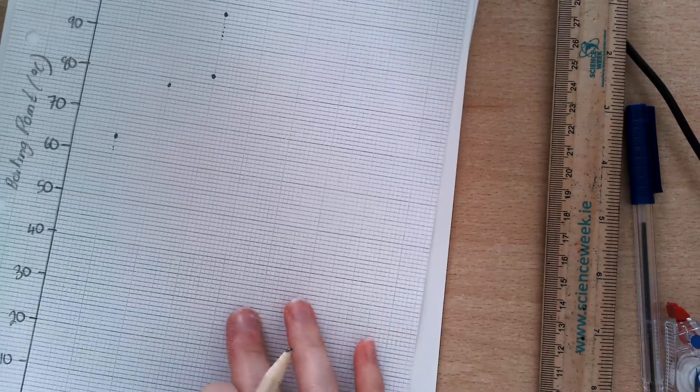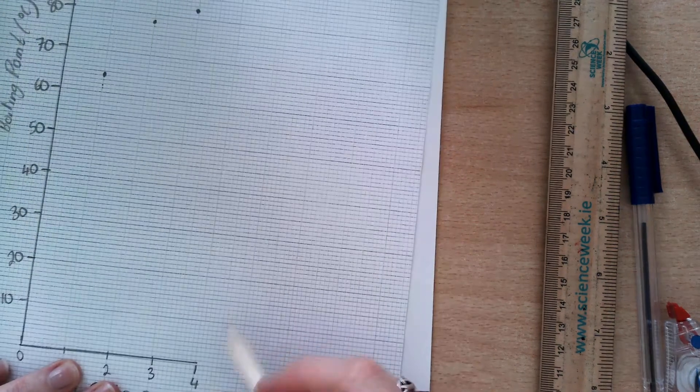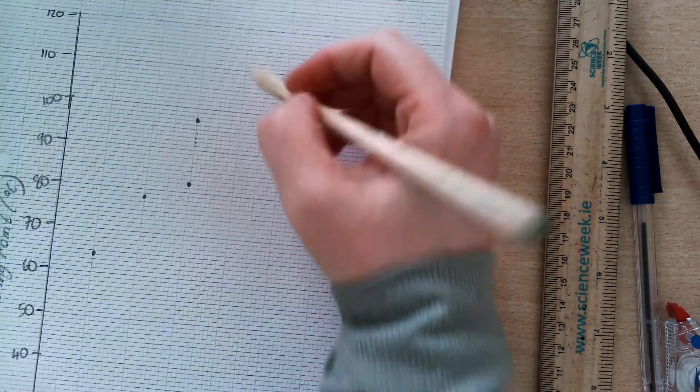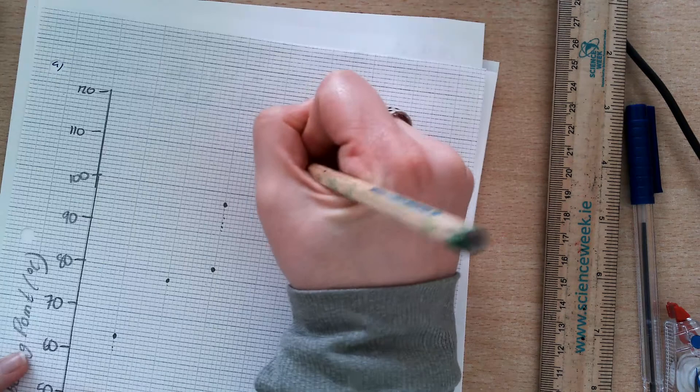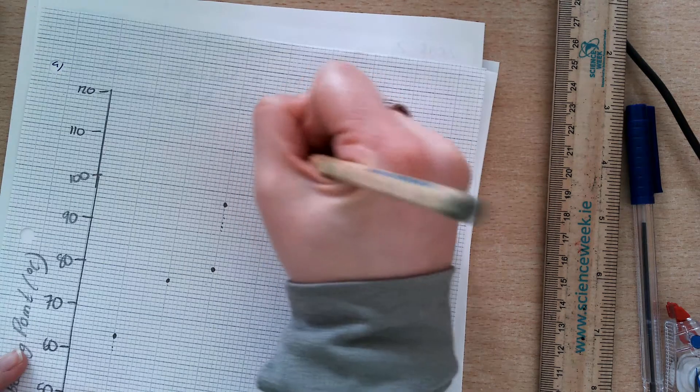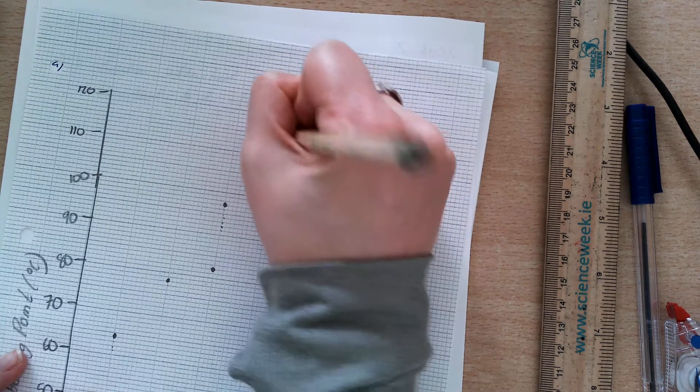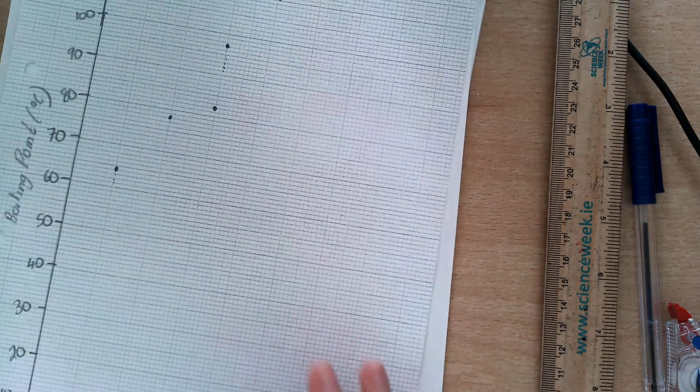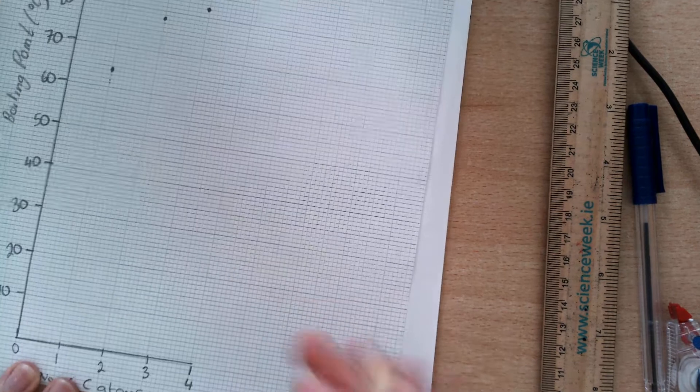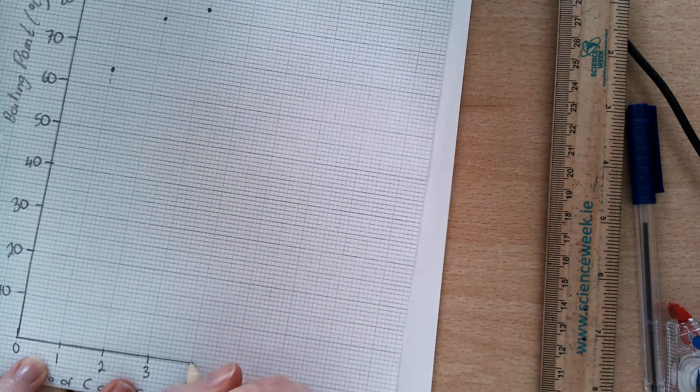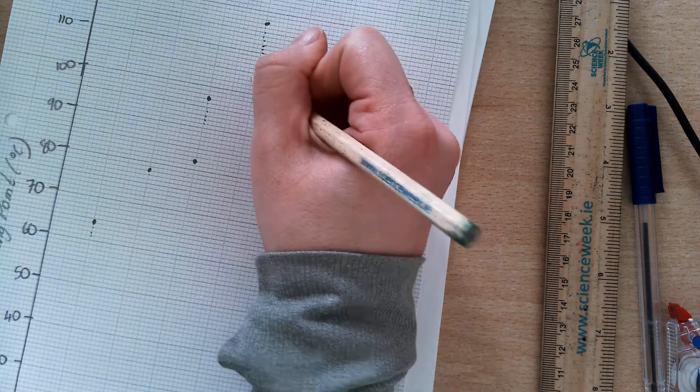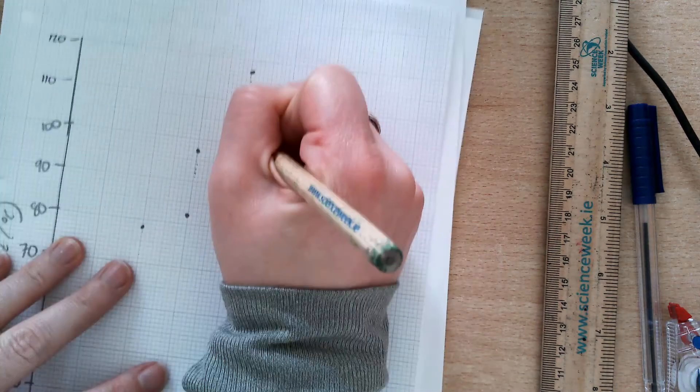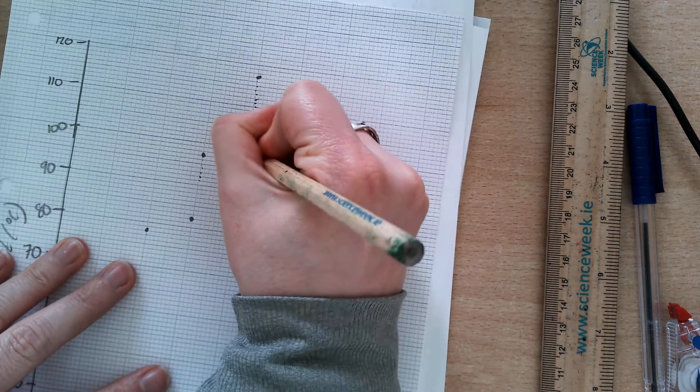So, if I look then at butan-1-ol, butane has four carbons, so I go up to 110, and it's at 117. And the last one, then, that I have is butan-2-ol, so again, butane has four carbons, so I go up here to four, but I'm at 99.1.